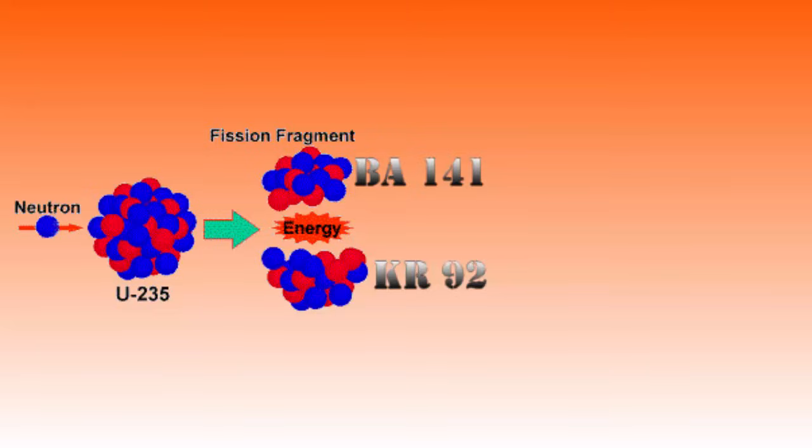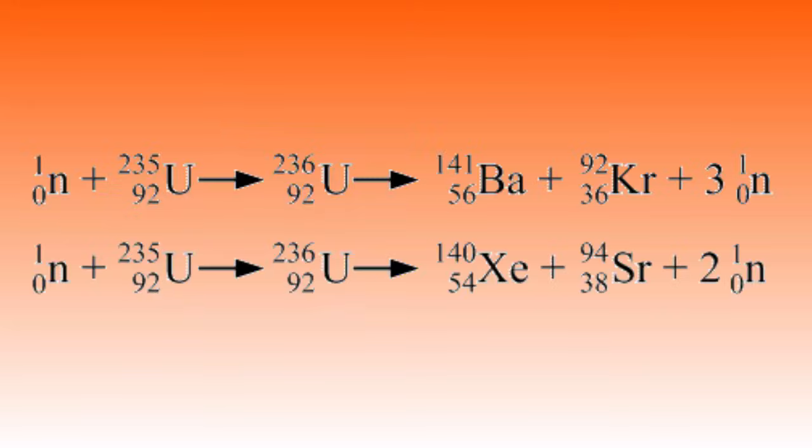Those of you paying attention will notice that 92 plus 141 is only 233, not 236. The reaction will also generate three neutrons. This is, by the way, not the only way the uranium-236 atom can split. Consider this an example.